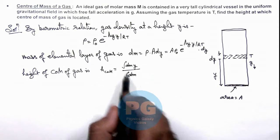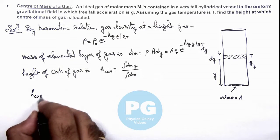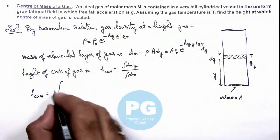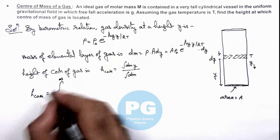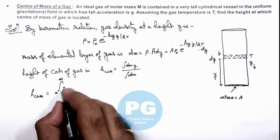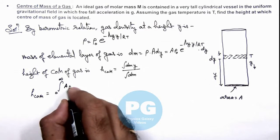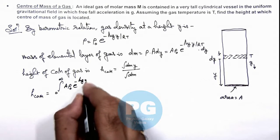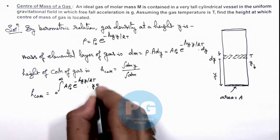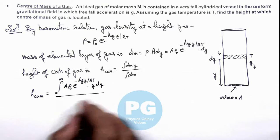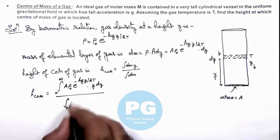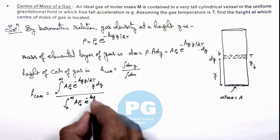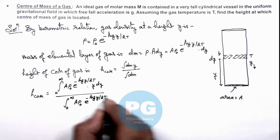So now on substituting the values here, height of center of mass is given as: integration, as it is a very tall vessel we can write it from zero to infinity, dm we can write as A·ρ₀·e^(-Mgy/RT)·y·dy, divided by integration from zero to infinity, A·ρ₀·e^(-Mgy/RT)·dy.